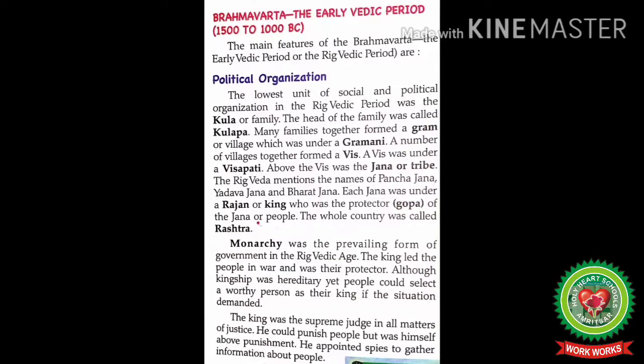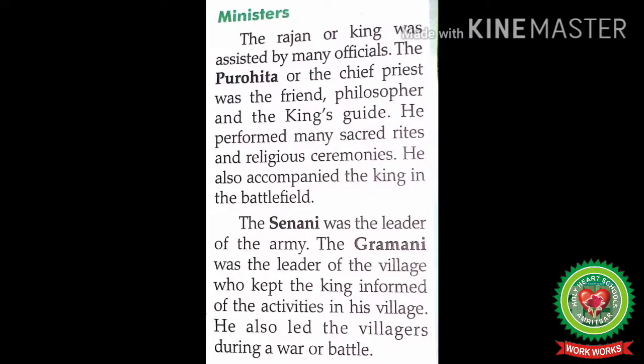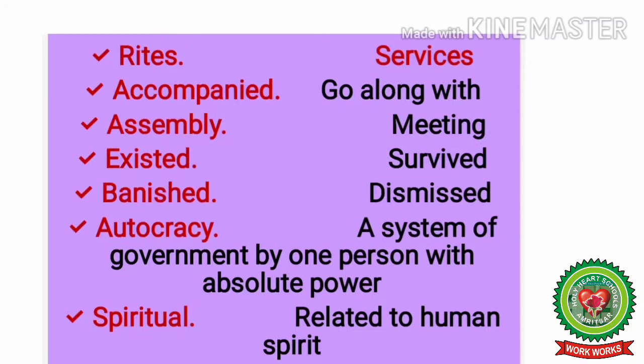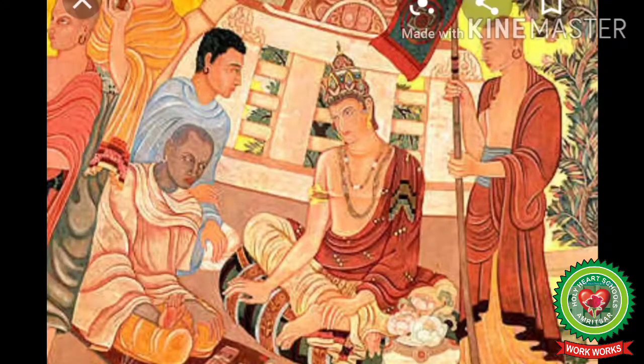The Rajan or king was assisted by many officials. The Purohit, or chief priest, was the friend, philosopher, and guide of the king. He performed many sacred rites and religious ceremonies and also accompanied the king on the battlefield. The Purohit used to give instructions to the king and also went with the king into the field of battle to help him in war.